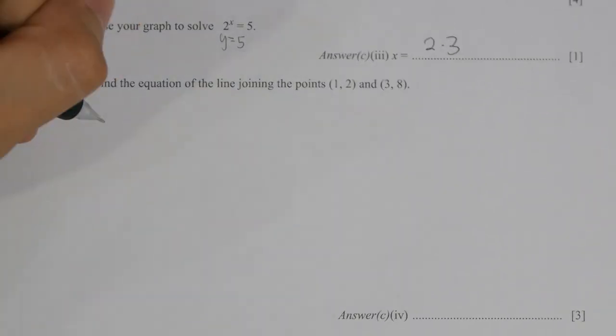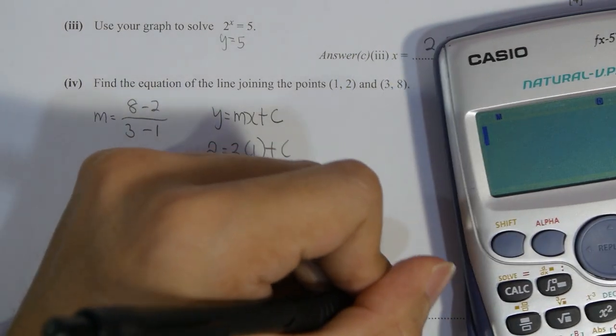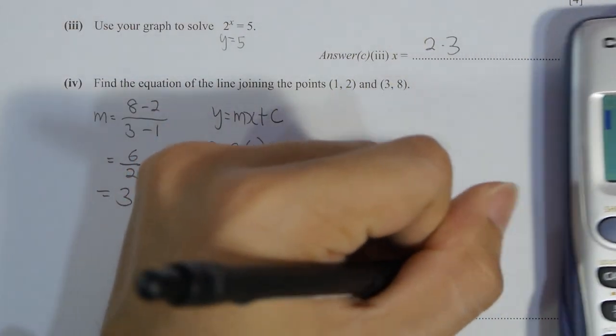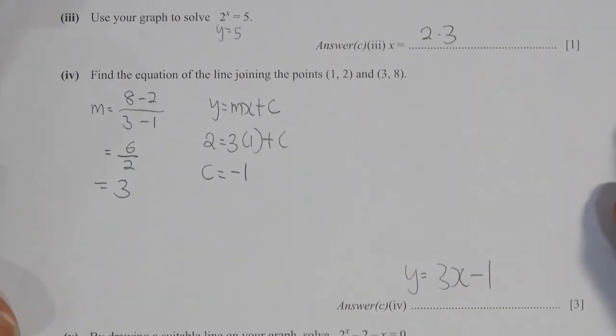Calculate the equation of the line. I used the two given points to calculate the gradient, and after the calculation, I get the gradient as 3. So y equals mx plus c, and our m is 3. I randomly picked the point (1, 2) and substituted it into the formula to calculate c's value. After the calculation, c's value is negative 1, so y equals 3x minus 1.